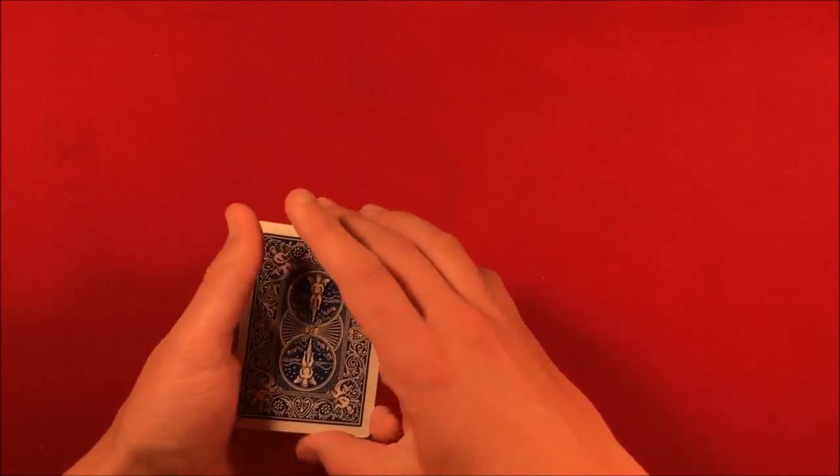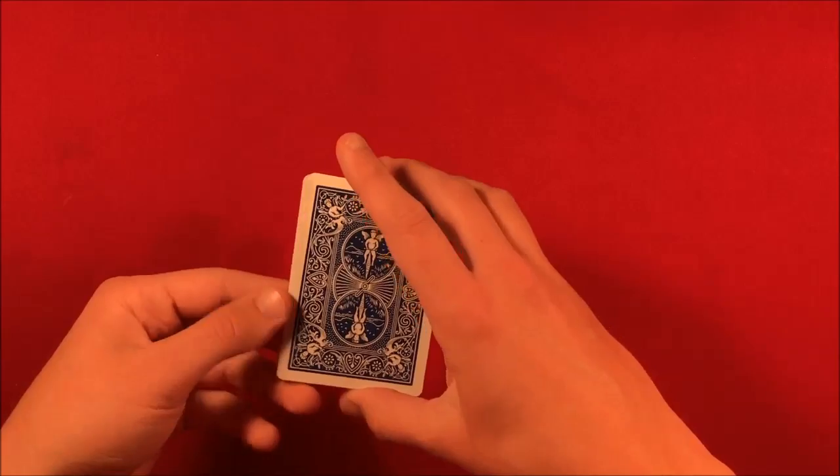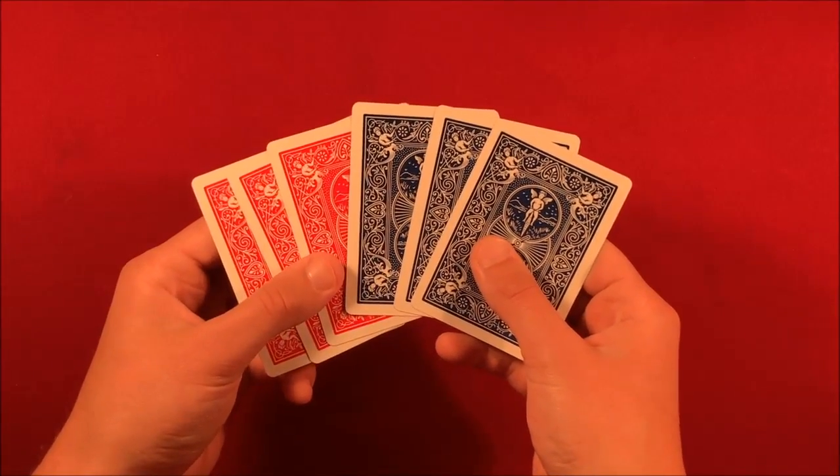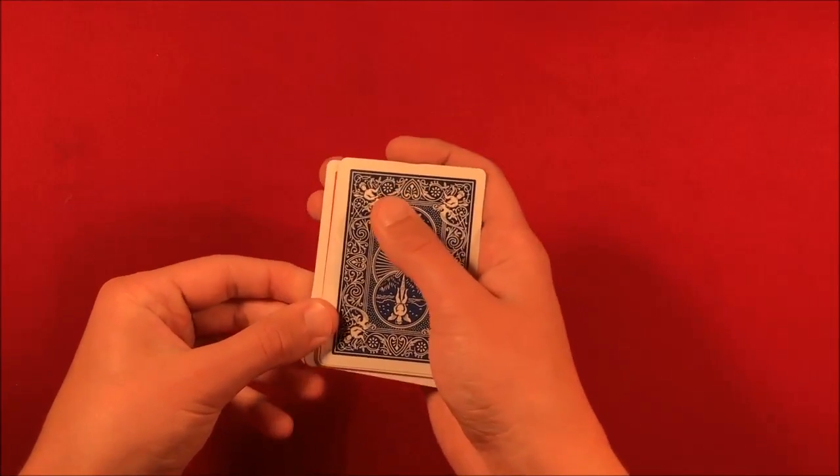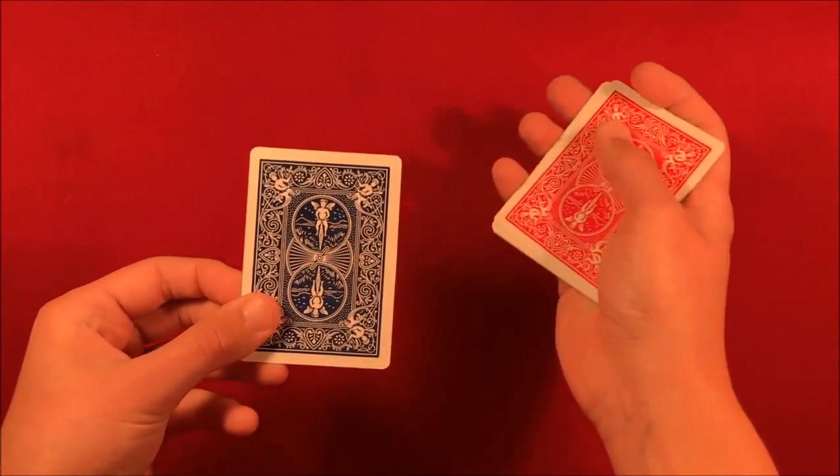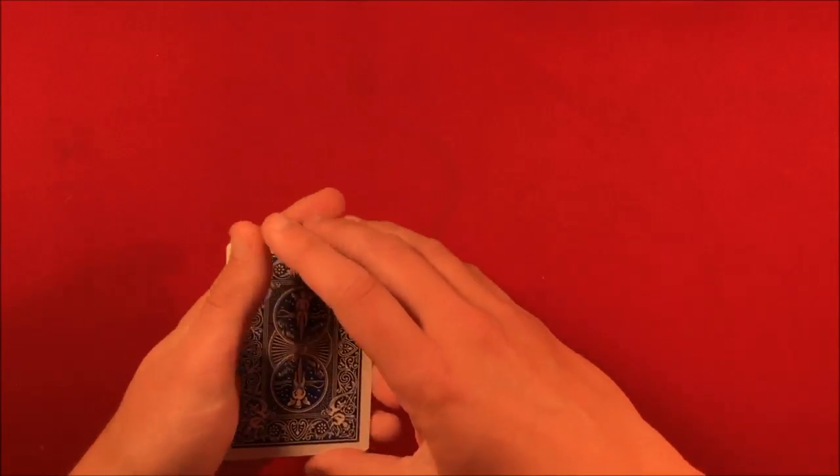I shake it, I can get one of them to change. So that's what you say to the spectator. And then all you have to do is, because you're in this order, you can do another Elmsley count, and one of the cards will actually reveal itself to be red. And then you can shake it again. So the first two